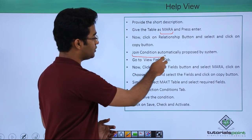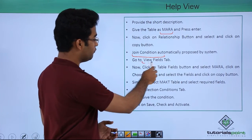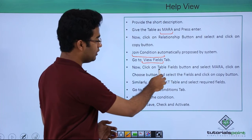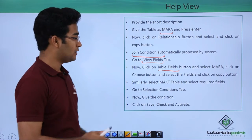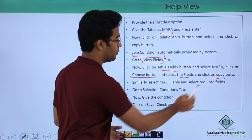Then the join condition would be automatically proposed by the system. We have to go to view fields tab and then click the table fields button and select MARA. Then click the choose button, select the fields, and click on copy button.